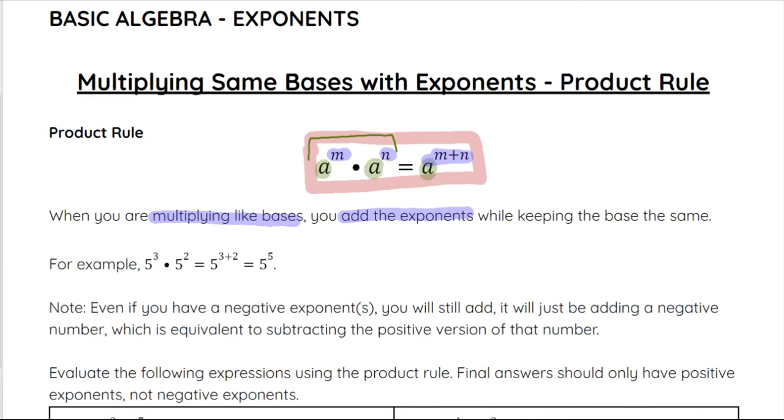So an example with some numbers, 5 to the 3rd power times 5 to the 2nd power. 5 to the 3rd and 5 to the 2nd have the same base, so we can go ahead and use what we call this product rule. And again, with the product rule, we just add those exponents together, 3 plus 2, which gives us 5. And then 5 to the 5th power, if we were doing this problem, we could evaluate that either by memorizing or by multiplying it out by hand.